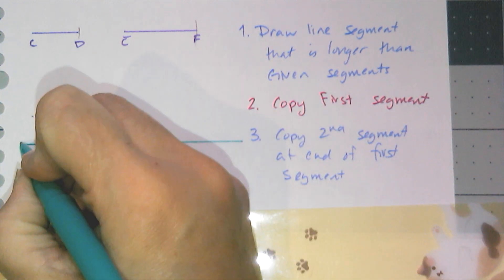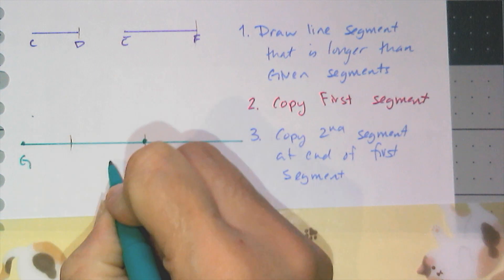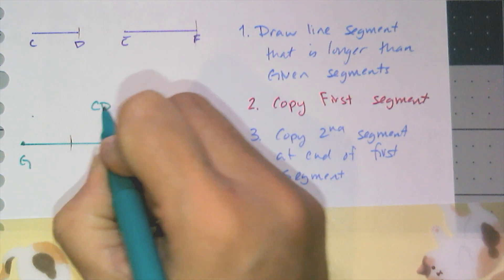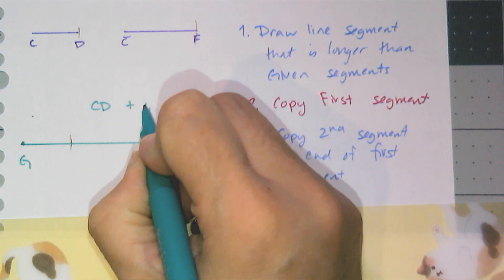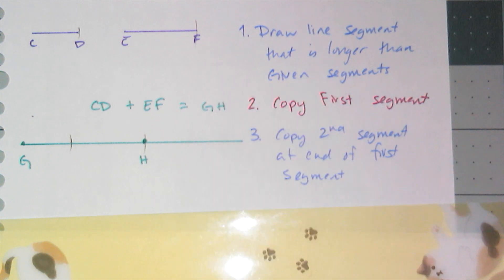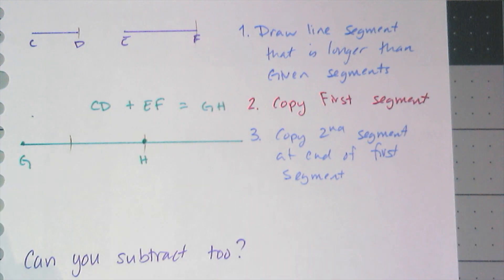This segment represents the length CD, and this segment represents the length EF. So this total length here — I'm going to call it GH — means that the length CD plus the length EF is equal to GH. The question I have for you, and we might do this in class, is: can I subtract lengths? If I can add using a compass, can I subtract?